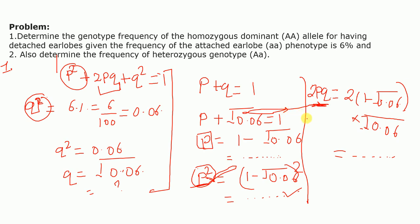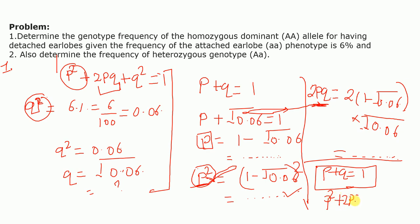This is how we use the Hardy-Weinberg equation to determine allele frequency and genotype frequency. Remember the two most important equations: equation one is p plus q equals one, used to determine allele frequency, and equation two is p squared plus 2pq plus q squared equals one, used to determine genotype frequency. I hope this video was helpful. Please like, share, and subscribe to our channel for more content like this. Thank you very much for your kind attention.